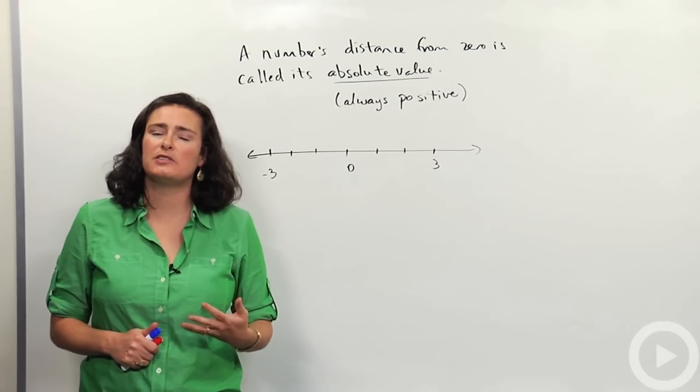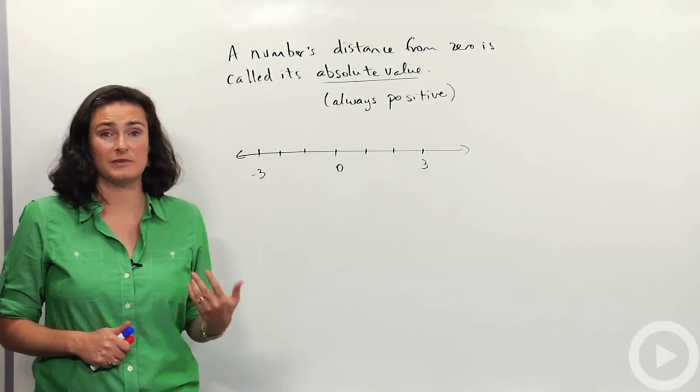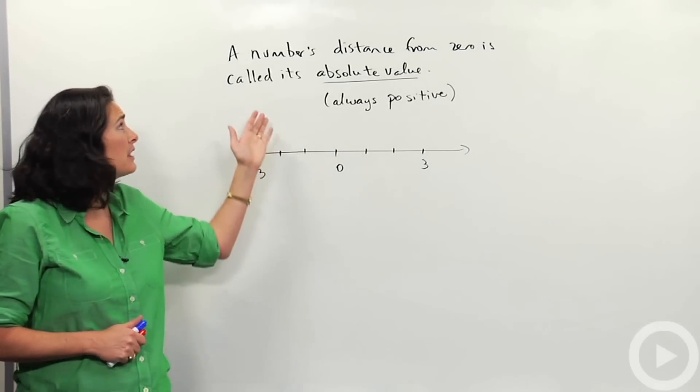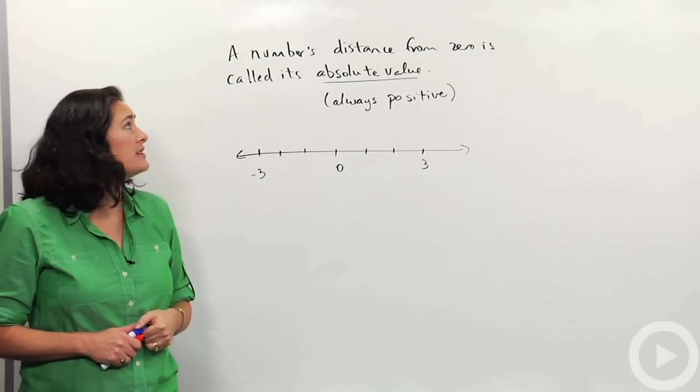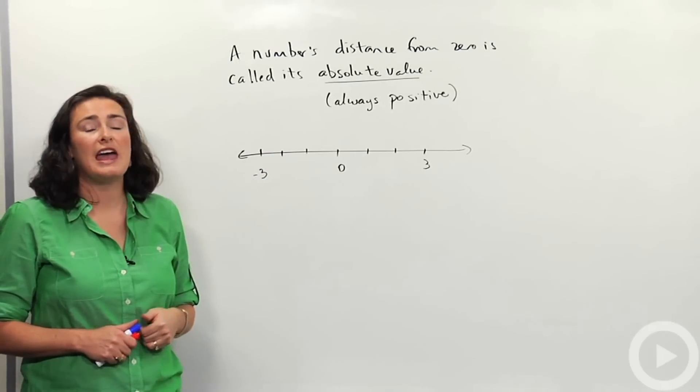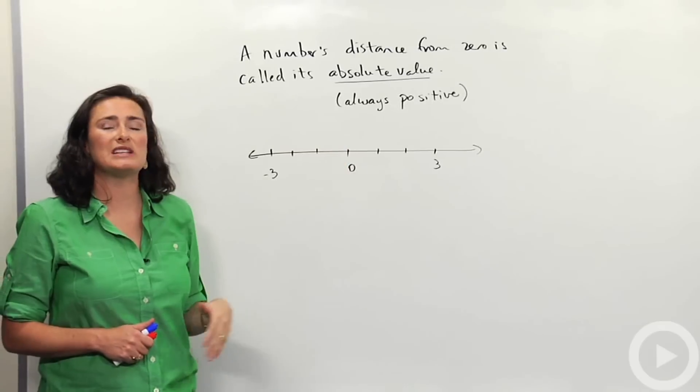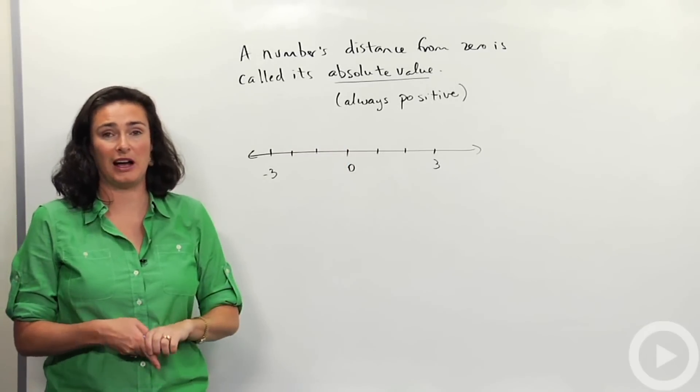So in math we have a special way of representing distance away from zero. And that's called an absolute value. A number's distance from zero is called its absolute value. And again, the absolute value will always be positive because distance is a positive number.